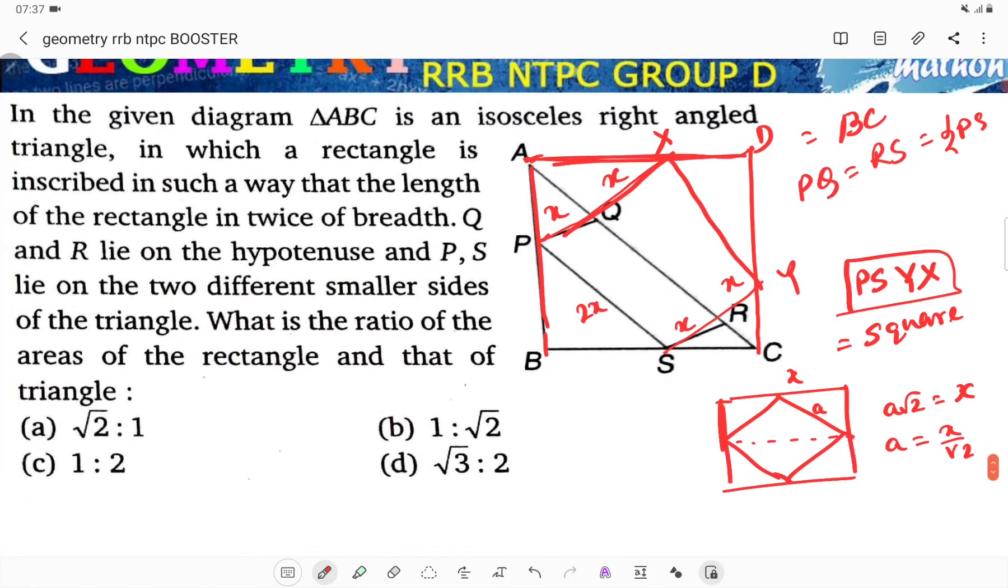The outside square area is x squared. What is a squared? A squared is x squared by 2. Similarly here, PXYS is...